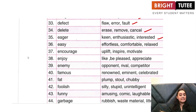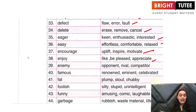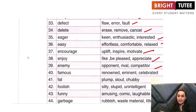'Eager' — is keen, enthusiastic, interested. 'Easy' — is effortless, comfortable, relaxed. 'Encouraged' — is to uplift someone, inspire someone, motivate someone. 'Enjoy' — is like, to be pleased, to appreciate. 'Enemy' — is your opponent, your rival, your competitor.